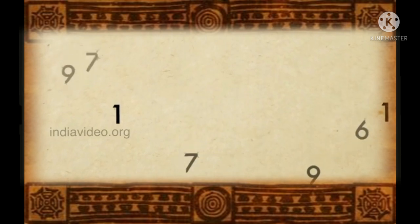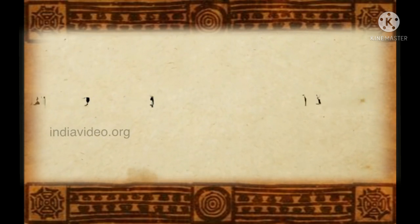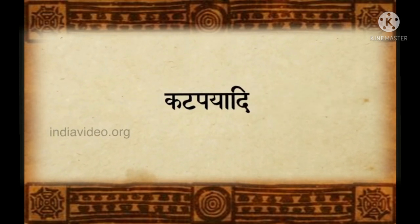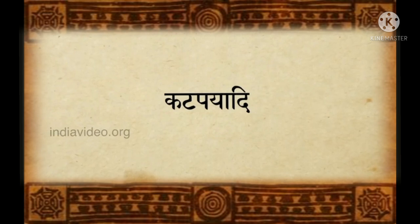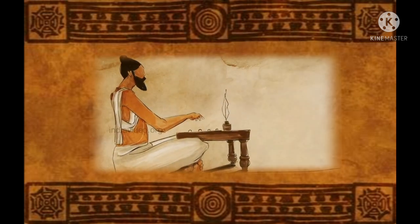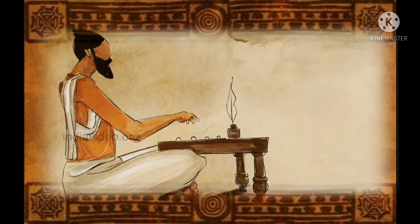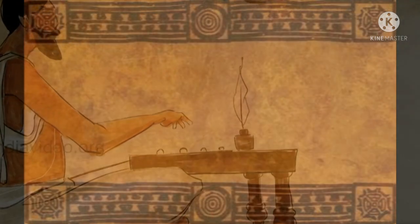Katapayadi is an ancient system of representing numbers with Sanskrit alphabets. It offers a convenient way to remember very large numbers by encoding them into sentences of prose or poetry. Some historians attribute the origin of the system to Vararuchi, a brilliant scholar from Kerala who lived during the 4th century CE.